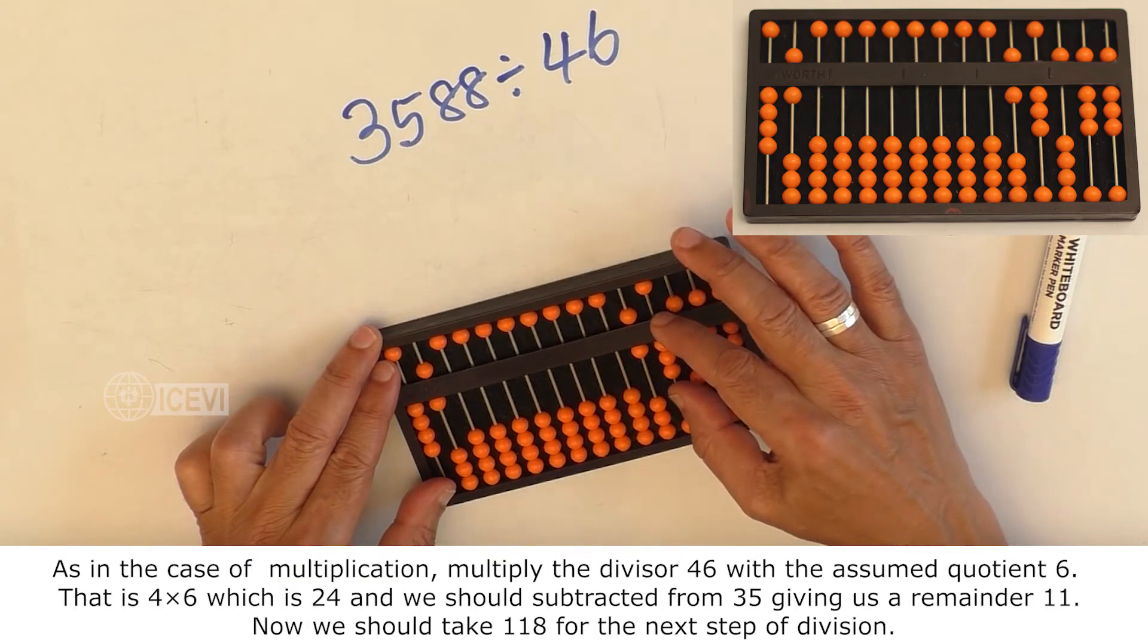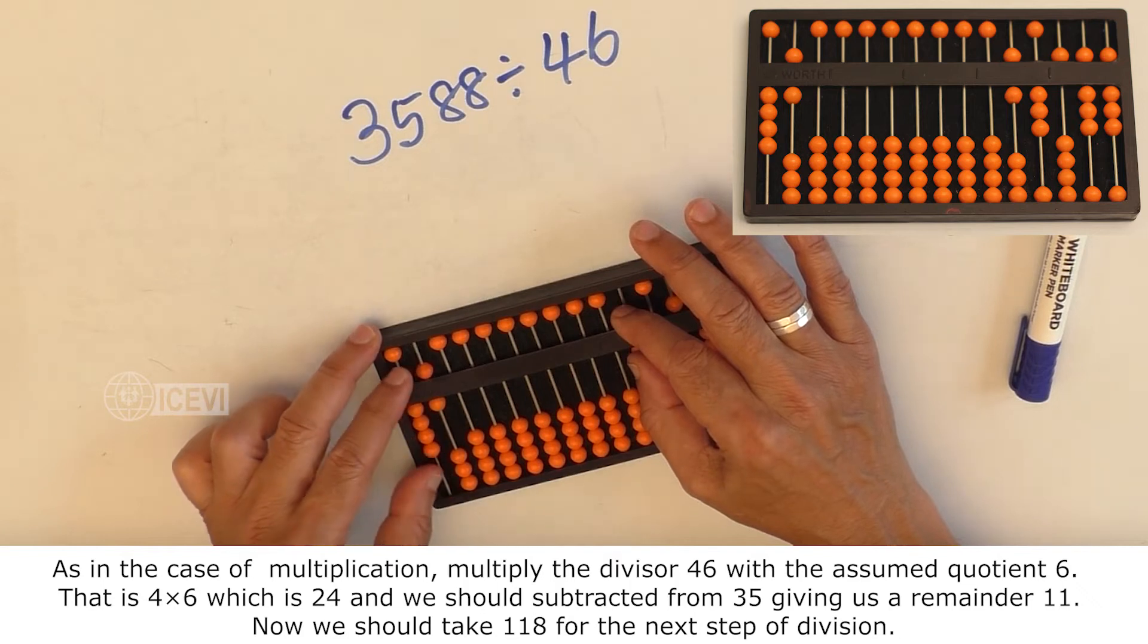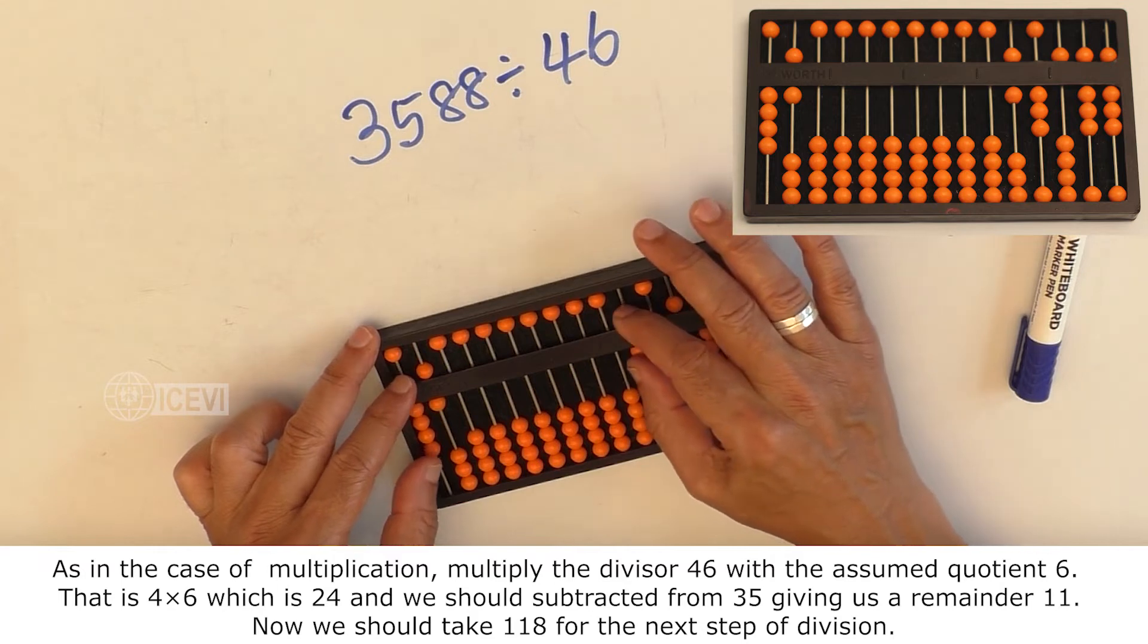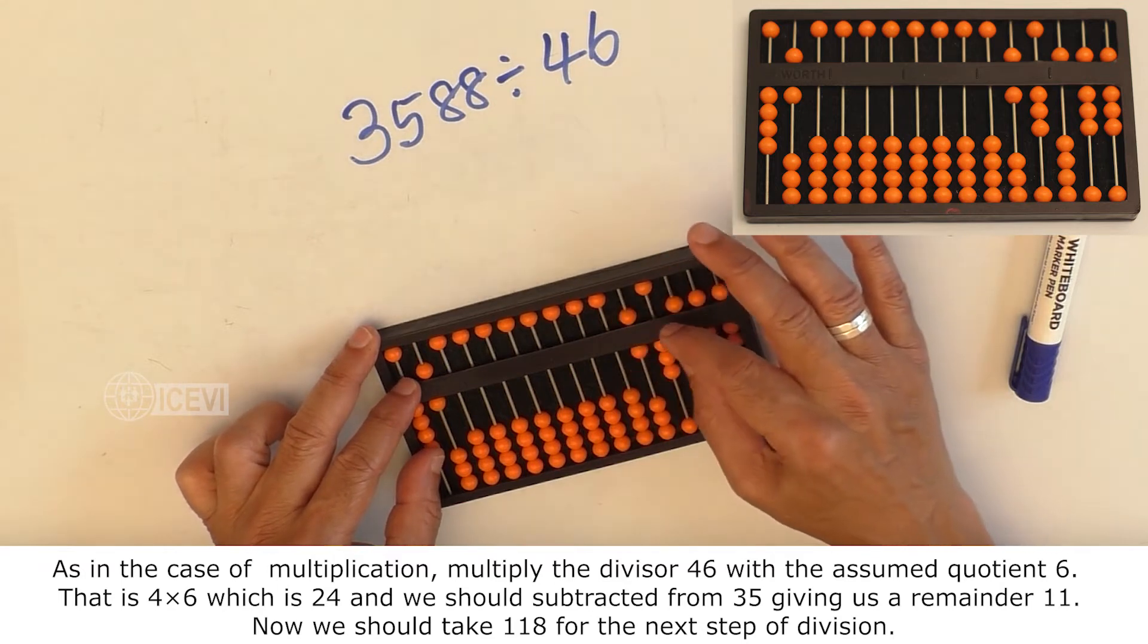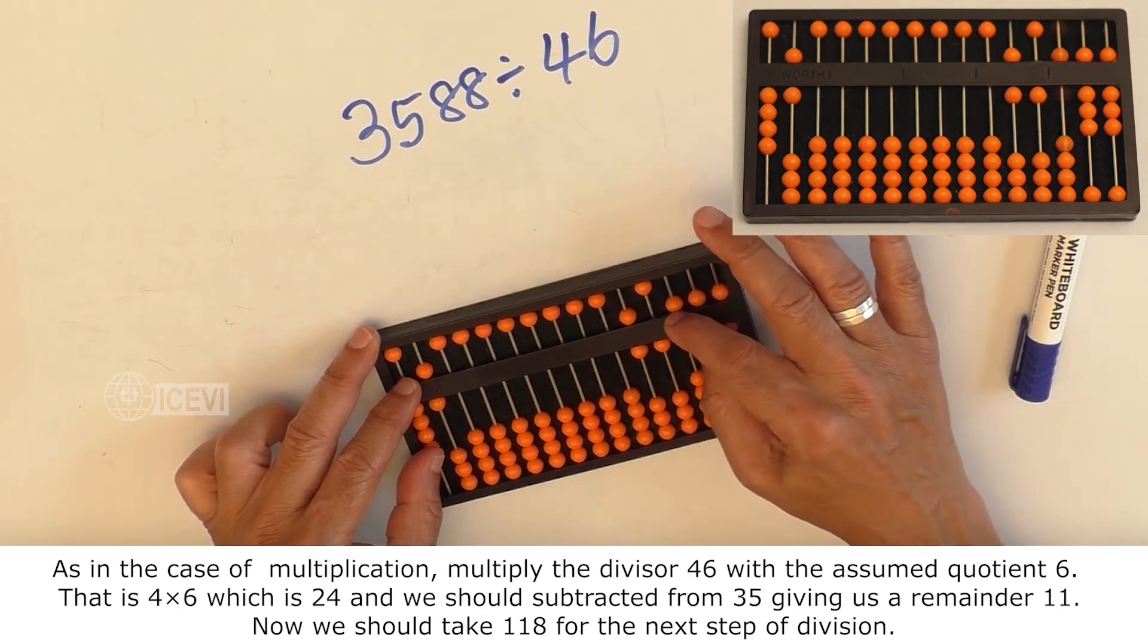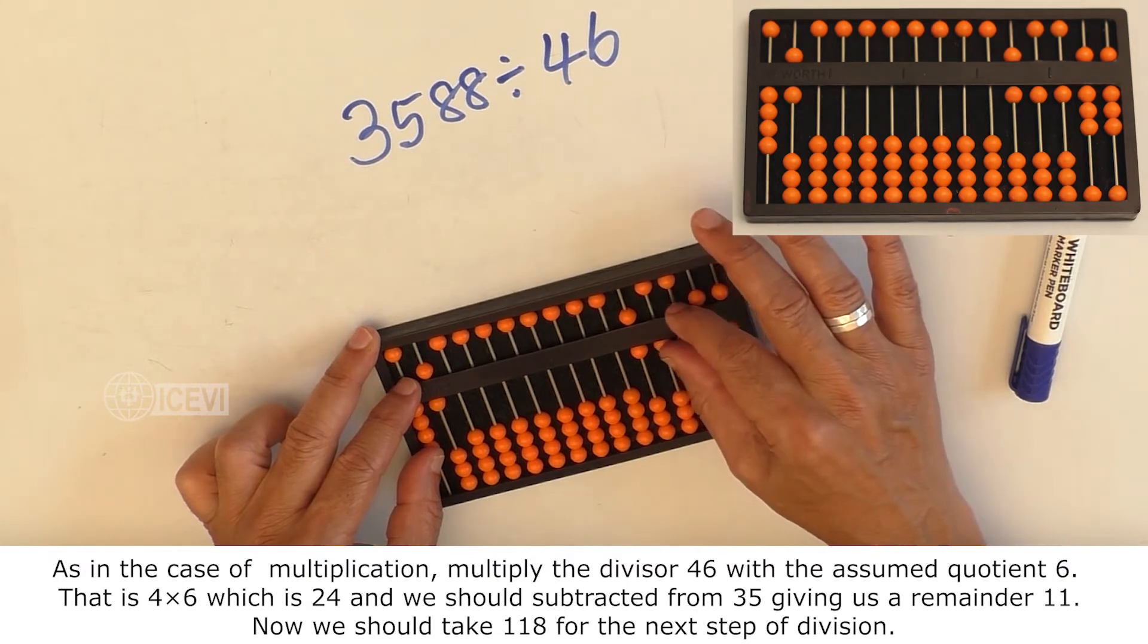As in the case of multiplication, multiply the divisor 46 with the assumed quotient 6, that is 4 multiplied by 6, that is 24. That should be subtracted from the dividend, which is giving a remainder of 11.